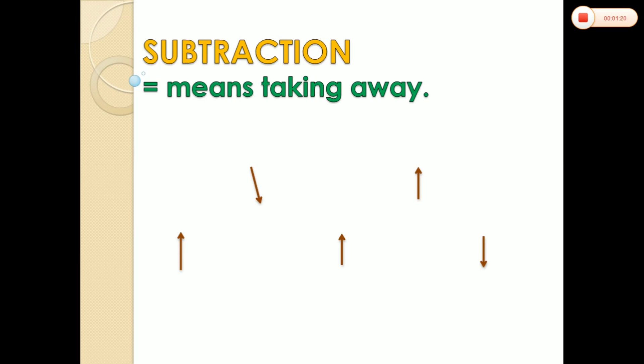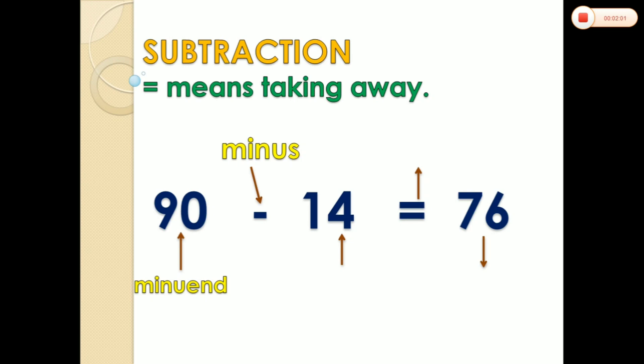Now let's talk about the numbers in this example of subtraction. We have 90 minus 14 equals 76. Let's identify the different parts of subtraction. The first number is what we call minuend. The symbol is what we call minus. The second number is what we call subtrahend. And as always, using equal to or equals. The answer in subtraction is what we call difference. These are the parts of subtraction.